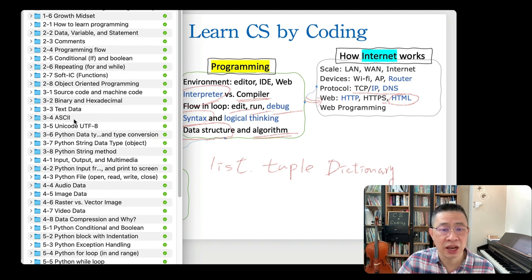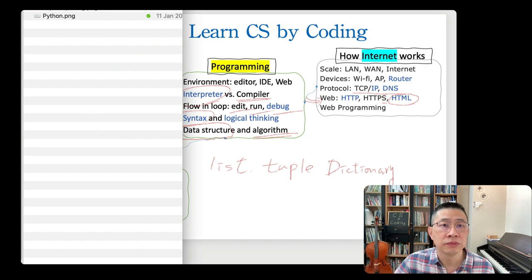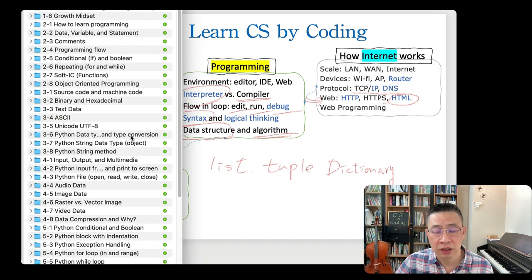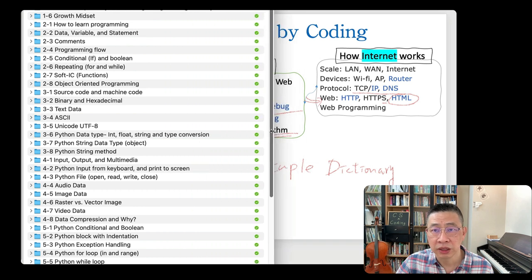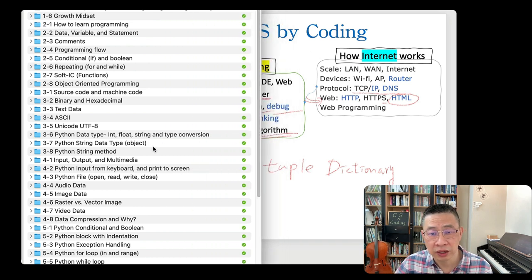So we must understand the binary number system and hexadecimal number system - it's a 16-base number system. Different types of text data - ASCII, Unicode, etc. So from there, we start to mix the programming language syntax by studying the syntax at the same time we explore the computer system.